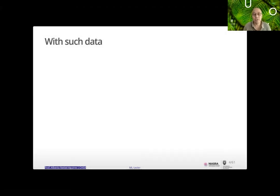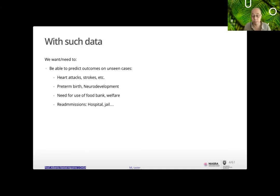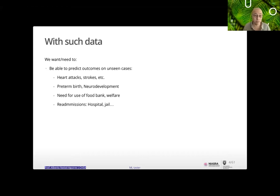With such data, people usually want or need to predict outcomes. I'll be working on the prediction realm, though sometimes we want to do inference regarding associations or effects — being careful with the word 'effect' — for example, predicting heart attacks, strokes, pre-term birth, need for food banks, or hospital readmissions.